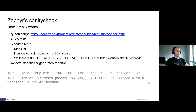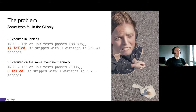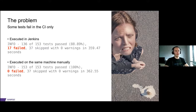Looking at the sanity check output, we see not just a couple but quite a few problems — 17 tests failed. That's not something we want. And when we try to reproduce those failures locally, even on the same server where automation runs, we are unable to reproduce them, which makes debugging quite difficult.